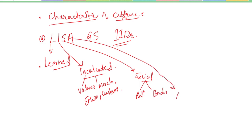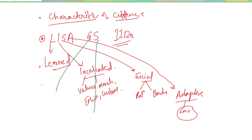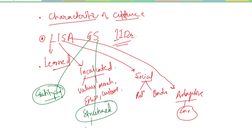A stands for Adaptive — culture is adaptive to environmental conditions. G stands for Gratifying — it provides satisfaction, inner peace, and a sense of accomplishment. The second S stands for Structured — it involves family, kinship, and various structural and social organizations.